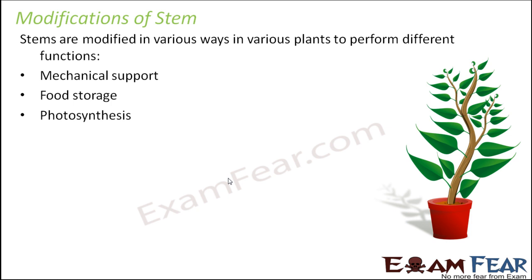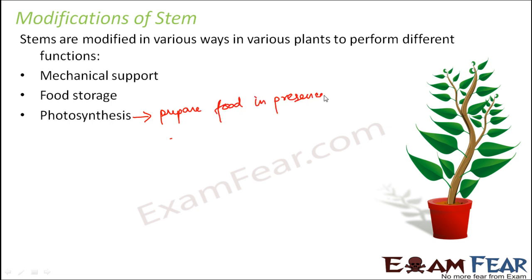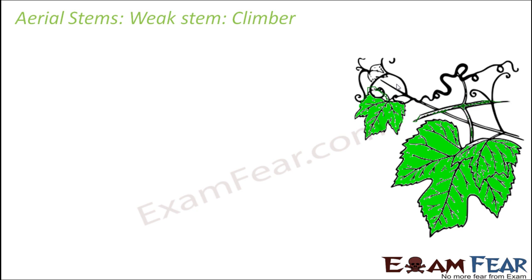Sometimes stems are also modified to perform photosynthesis — the process of making food in the presence of light. Photosynthesis is normally the job of leaves, but stems can be modified for it too. Stems can also be modified for defense, that is to protect the plant from enemies or outsiders.